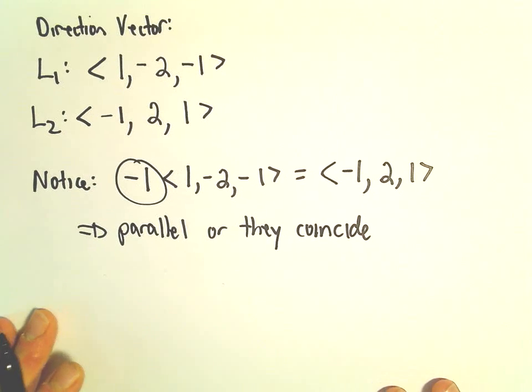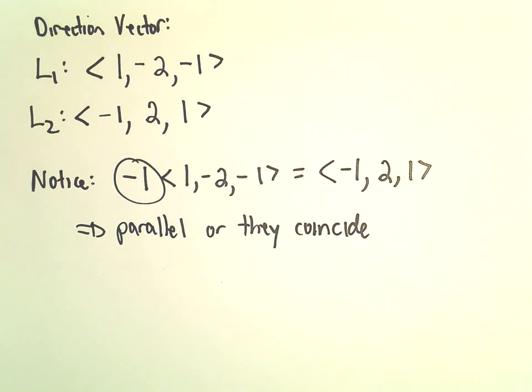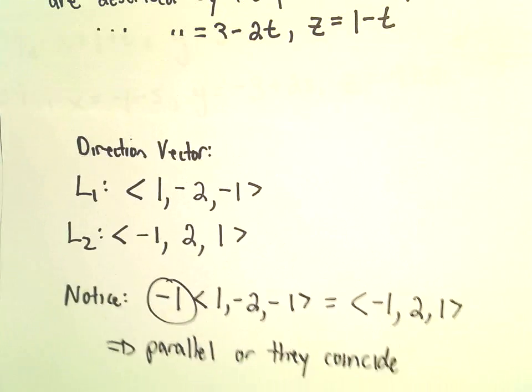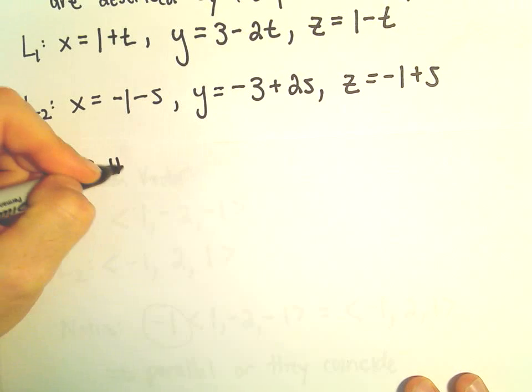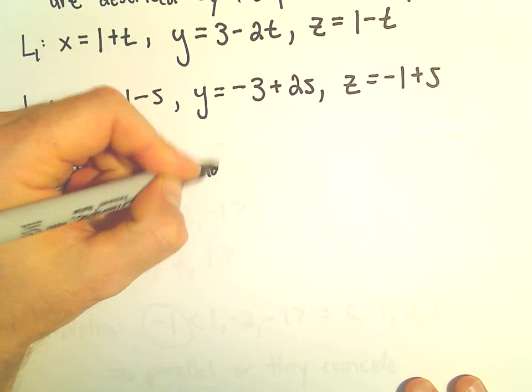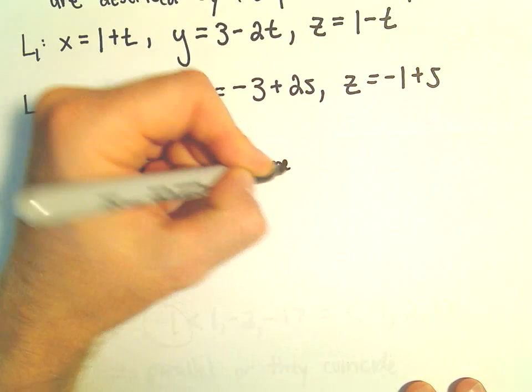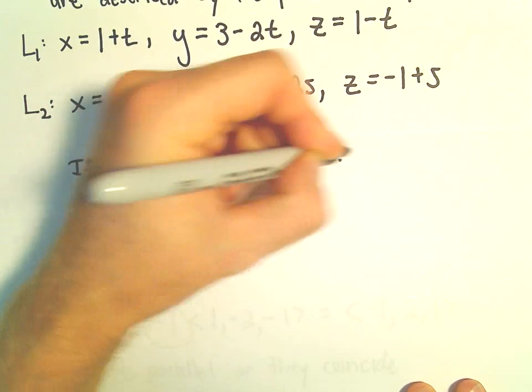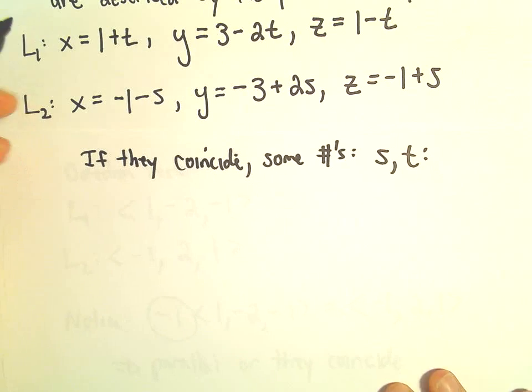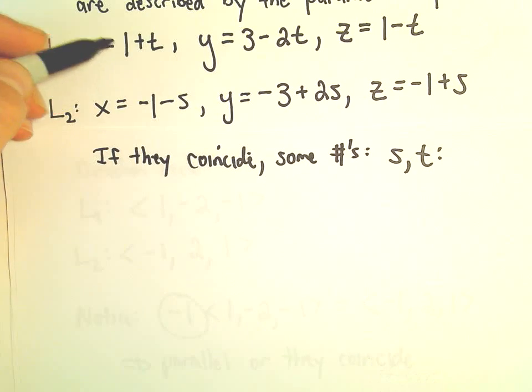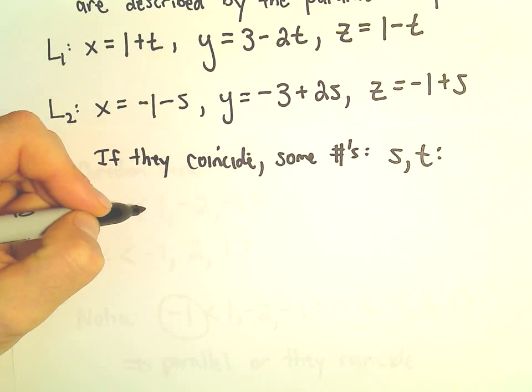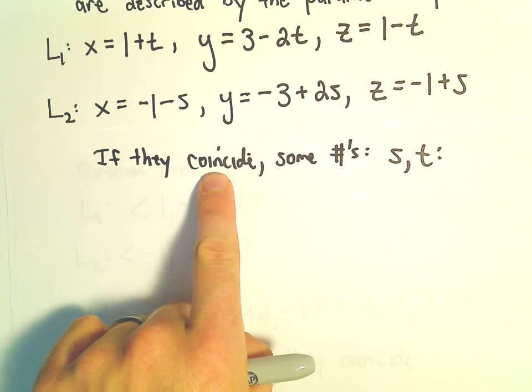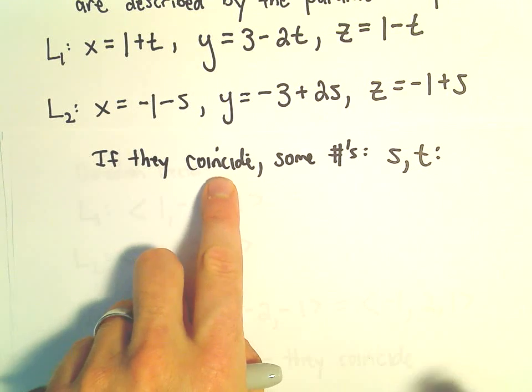So now we've got it narrowed down to these. If they coincide, we can create a little system of equations that we'll have to solve. If they coincide, there's going to be some numbers s and t that satisfy the equations. If they intersect at a point, since they're parallel, then they would have to coincide. So that's what we're trying to determine. Is there some point of intersection?